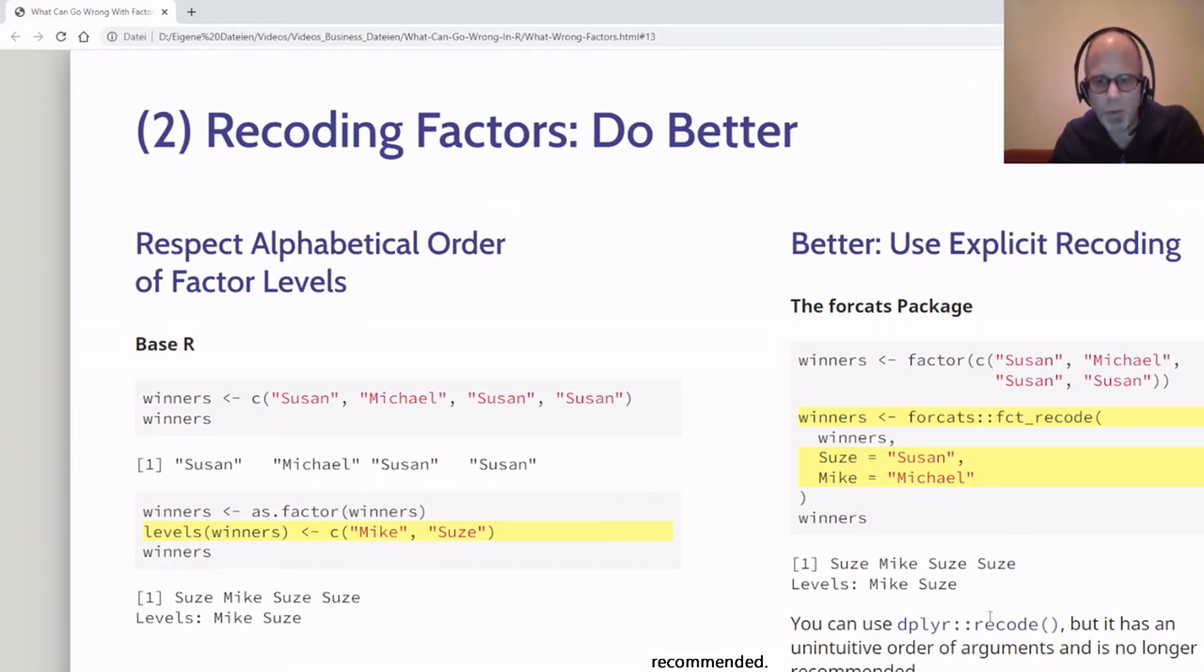Note that dplyr also has a recode function, but the order of arguments is unintuitive there, so you can use that but I think it's no longer recommended by the tidyverse team. My recommendation would be to use the forcats package to do that.